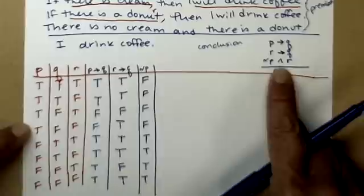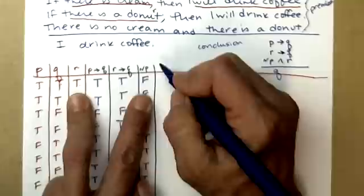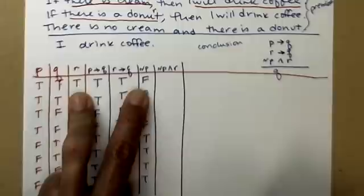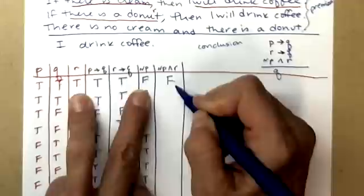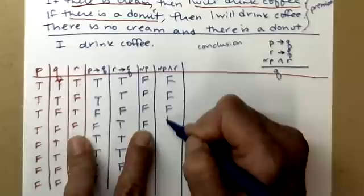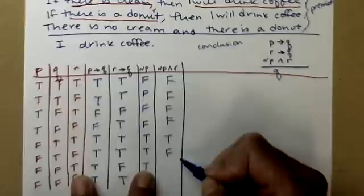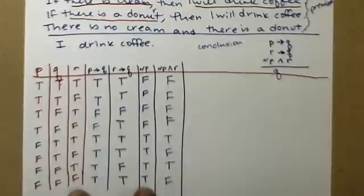And now I'm going to and that column, so not P column and R. For and to be true, I need two trues. So I have one false, so that's false. I have two falses, that's false. One false, that's false. And false. And here's a true, and a false, and a true, and a false.